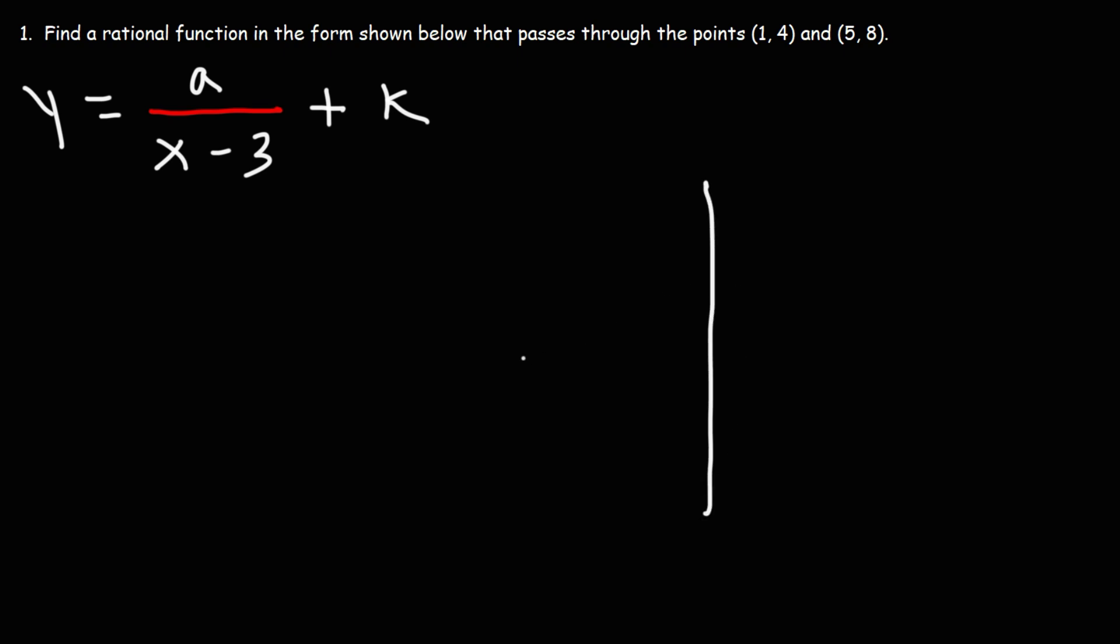Now for those of you who want to see a graph, here's how it's going to look like. So we're going to have a vertical asymptote at x equals h, whatever h is. In this case h is 3, so that would be x equals 3.